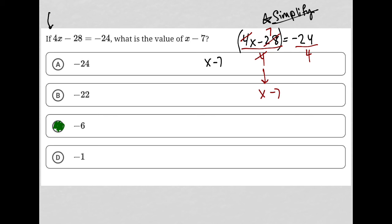So I would have x minus 7 there, and then this equals negative 6, and that way I get to my answer directly. So without having to solve for x first and then subtract 7, I just directly solve for x minus 7.